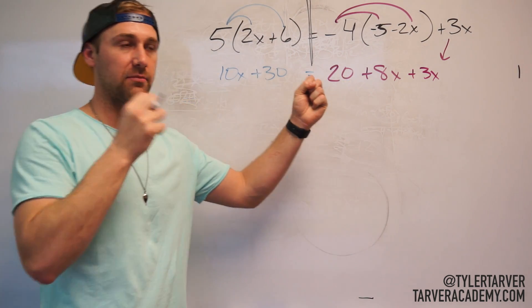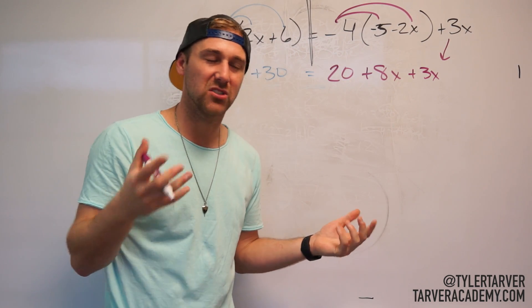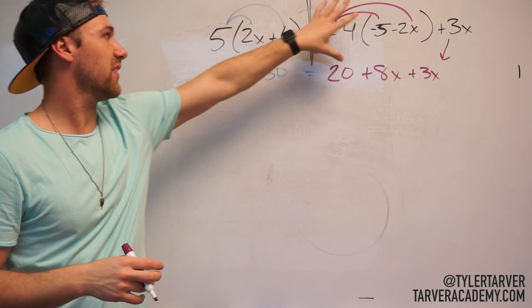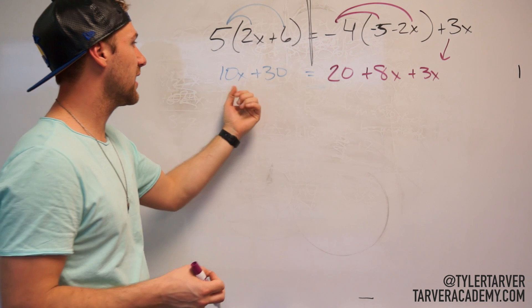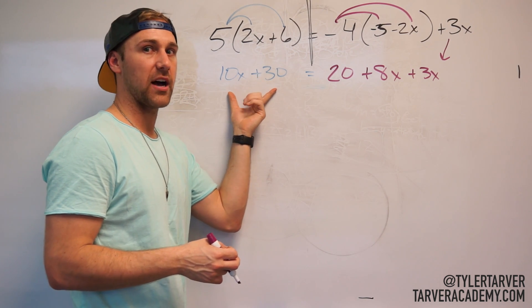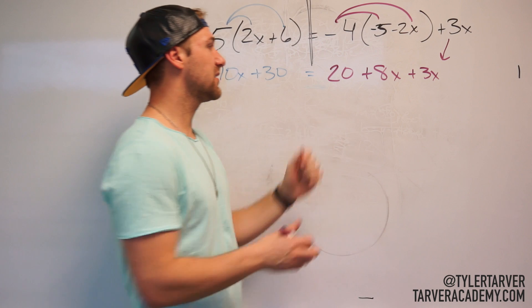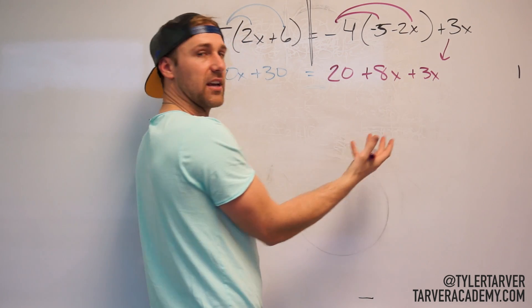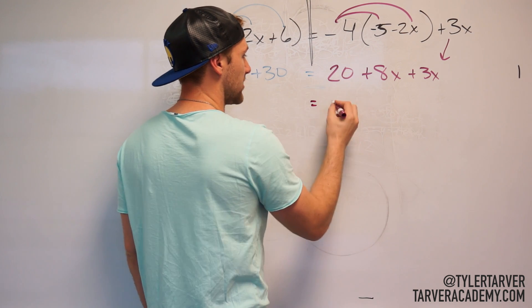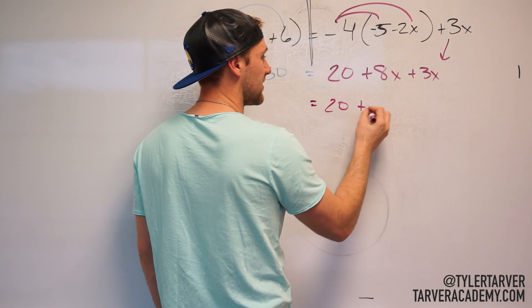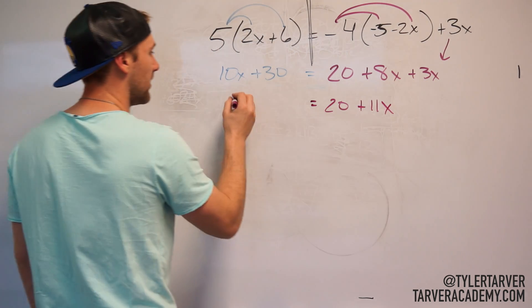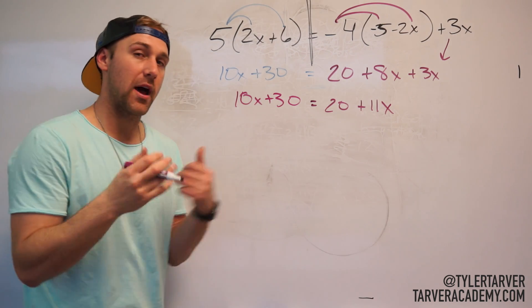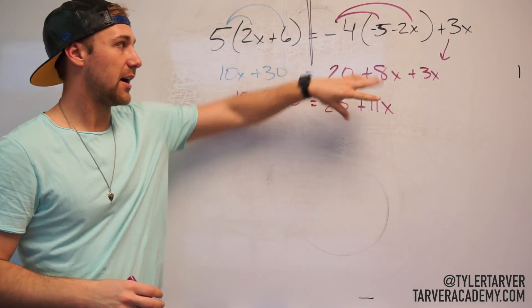Okay? So now I've simplified. I simplified those. Now I need to combine like terms. Are there anything on this side that I can combine? No, because that has an x in it. On this side, there is something I combined. There's nothing I combined with 20, but 8x and 3x, they can be simplified. So that's 20. And then 8x plus 3x is 11x because 8 plus 3 is 11.